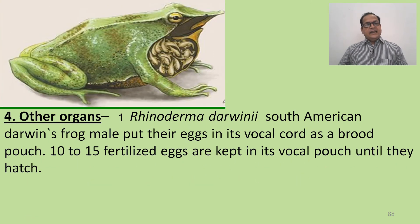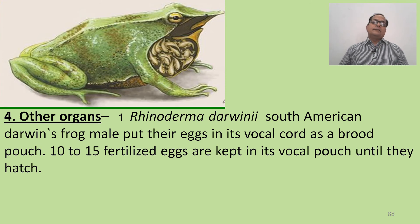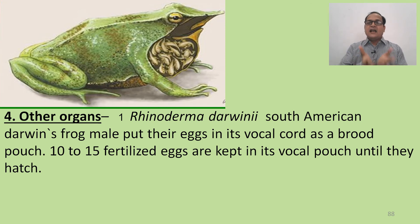Another example of parental care is Rhinoderma darwini, the South American Darwin's frog. The male puts the eggs in the buccal cord as a brood pouch, and 10 to 15 fertilized eggs are kept in the buccal cord until they hatch.